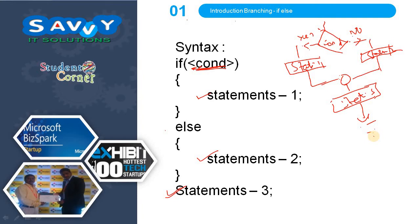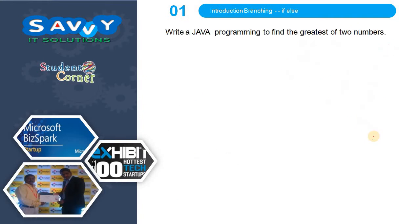Now we look into some programming examples so that it helps you in a better way. The first example is: write a Java program to find the greatest of two numbers.